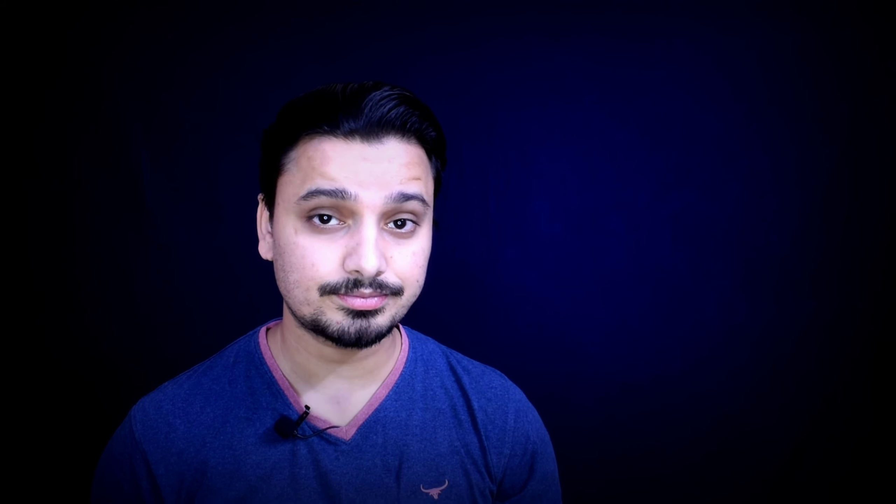When we talk about the DSLR — that is the digital single lens reflex — the 'reflex' word describes the availability of the mirror inside the camera body. When the light coming from the object enters the aperture, it directly hits the mirror first.